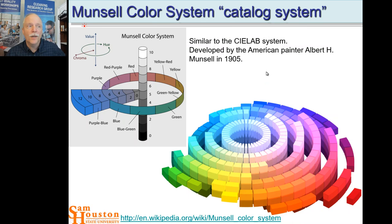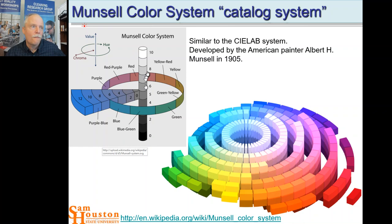The Munsell catalog system was made for paints by Albert Munsell in 1905, predating the CIE. It's a similar system — a circular arrangement of hues with a black-to-white lightness scale. These Munsell color values were referenced back in the color spot test for drugs, where we had Munsell color designations for the different drug spot test results.